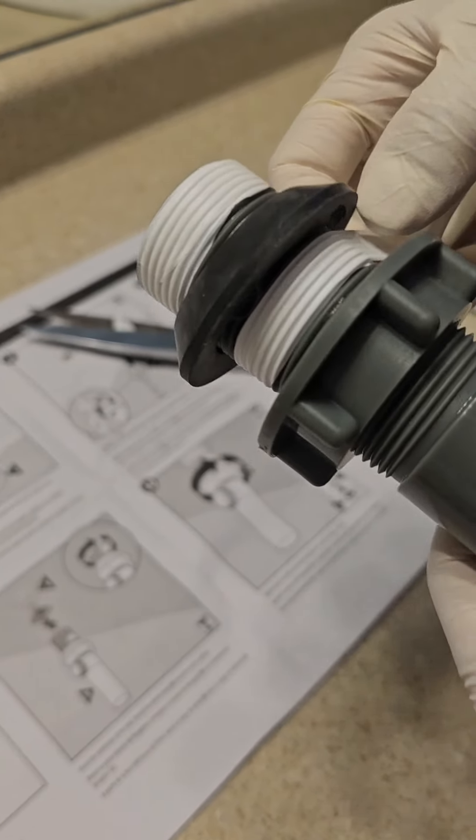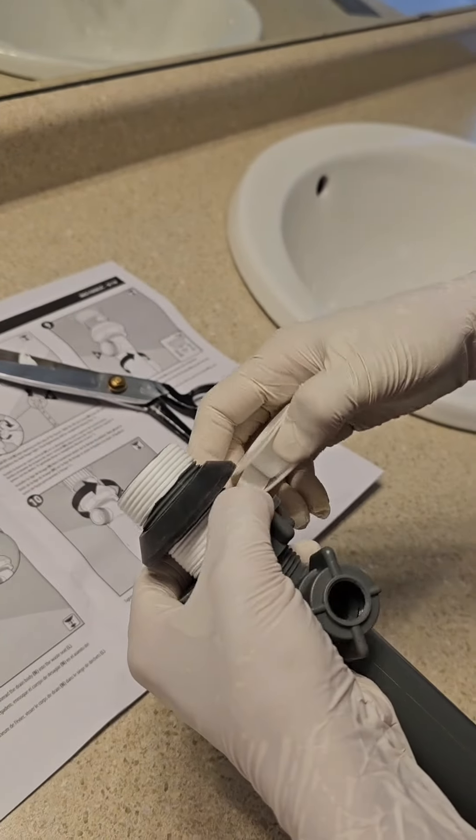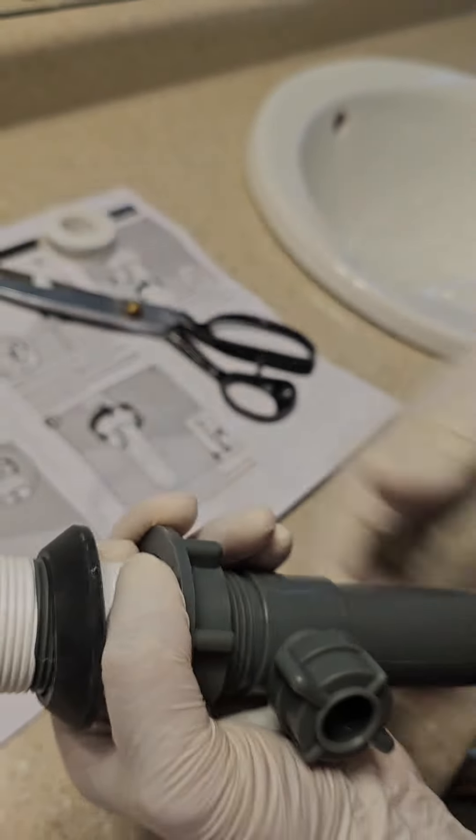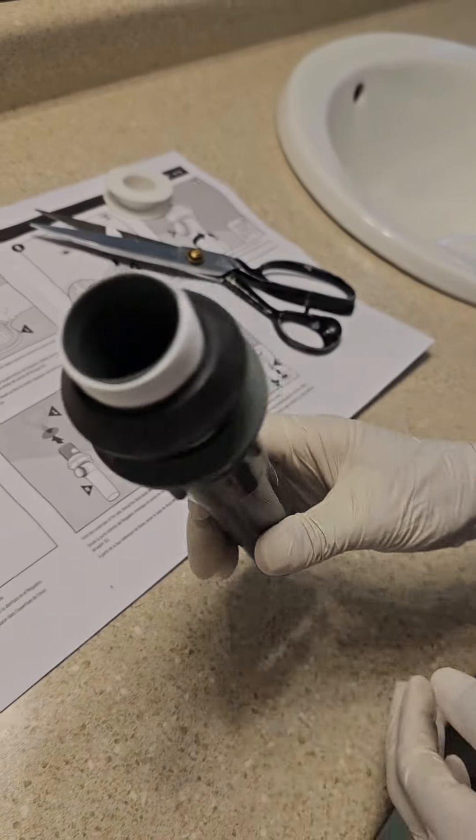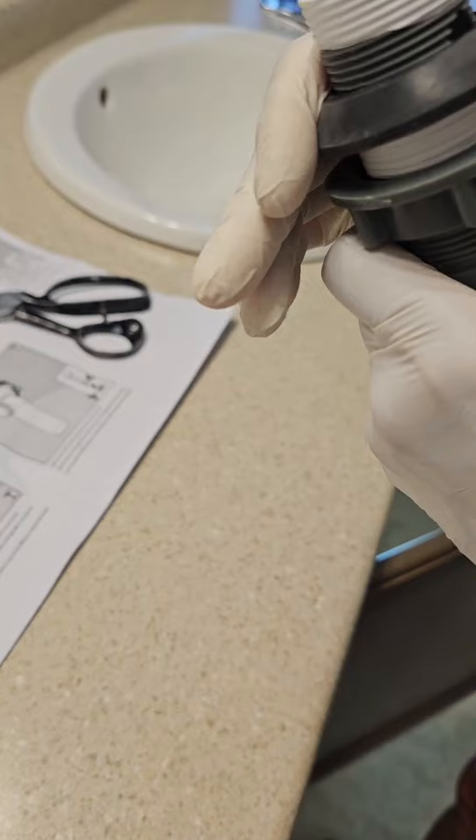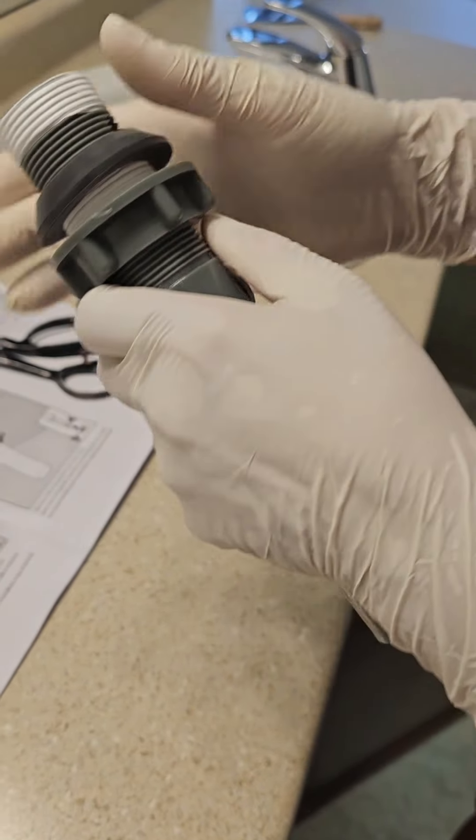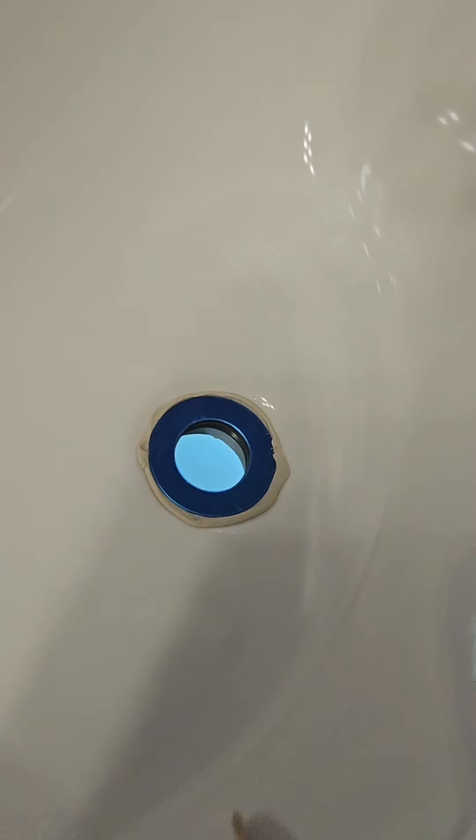This is the overflow drain. If your sink is filling up, water flows through a channel and goes through these weeping holes on the drain pipe. Water can easily leak through these if the threads are not sealed properly.